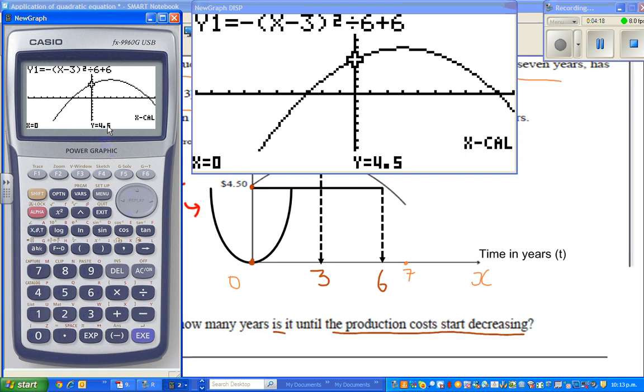So the first time it reaches $4.50 is now. That is t equals 0. And if you press this, you will get after 6 years, that is, this x is your t, and your y is your cost. So in the 6th year, the cost would be $4.50.